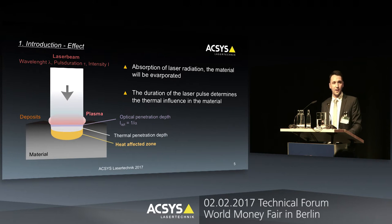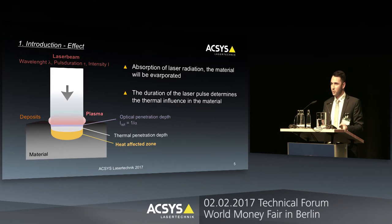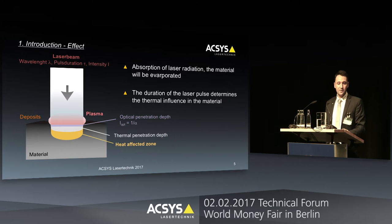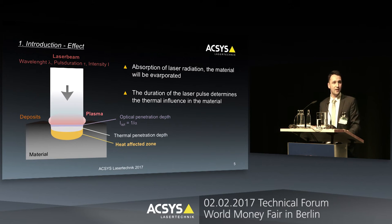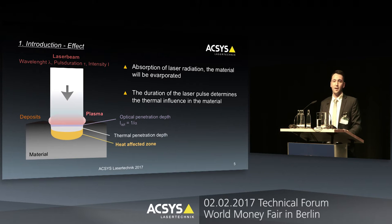The duration of a laser pulse — we call it the pulse duration — determines the thermal influence in the material. We see that here in yellow color as a heat affected zone. That means the longer the laser stays there, the bigger the heat affected zone will be in the material.